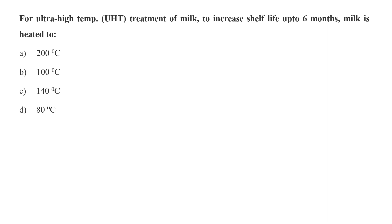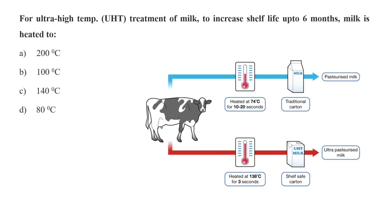For ultra-high temperature or UHT treatment of milk to increase shelf life up to 6 months, milk is heated to 200°C, 140°C, 100°C, or 80°C? Ultra-high heat treatment of milk is different from normal pasteurization method. In normal pasteurization, the milk is heated up to around 80°C. While in UHT, the milk is heated to 140°C for a brief period, let's say 3 seconds or 5 seconds. And ultimately this treatment destroys bacteria and other microorganisms. And now this milk is safe to consume even up to months. So here option C is the correct answer.